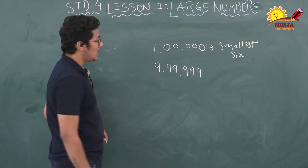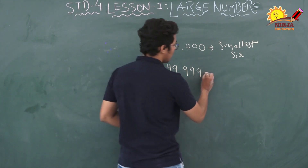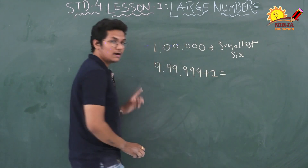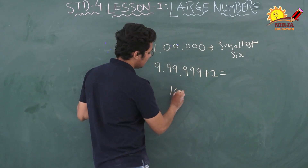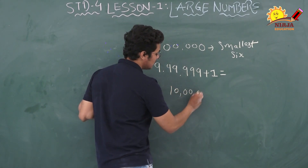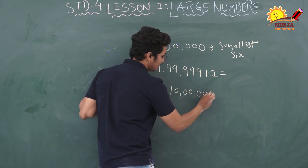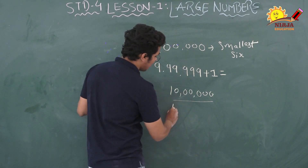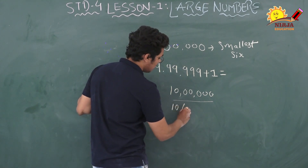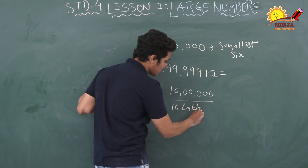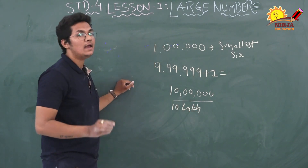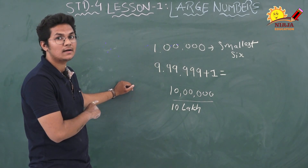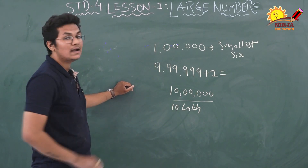What do we get if we add 1 to 9,99,999? If we add 1 to this number, we get 10,00,000 and we read this number as 10 lakh. For 10 lakh, we add another position to the lakhs position in the place value chart.